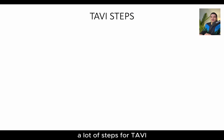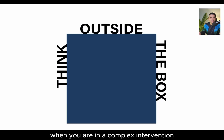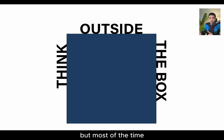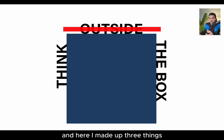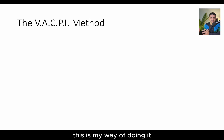First of all, you have to know that there are a lot of steps for TAVR — there are actually more than 42 steps. These are the oldest steps for TAVR. However, when you are in a complex intervention, sometimes you need to improvise, but most of the time you need to think inside of the box. I've made up three things to help, and first, you need to know the VASCP method — this is my way of doing it.